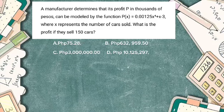Then we have 632,812.50 plus 150 minus 3. We add 150 and 632,812.50 to get 632,962.50, minus 3, giving us 632,959.50. So the profit if they sell 150 cars is letter B: 632,959.50 pesos.